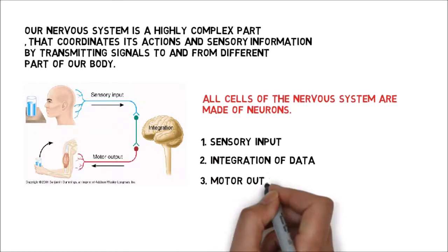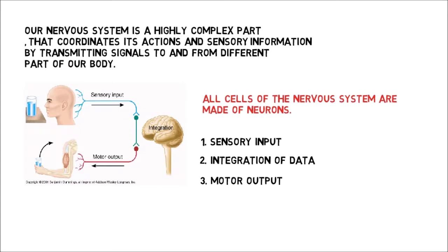Lastly, the motor output. After the brain has processed information, impulses are then conducted from the brain and spinal cord to the muscles and glands, which are called motor output. In simple terms, motor neurons transmit information between organs, glands, and muscles.